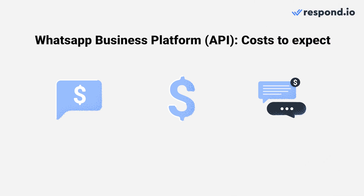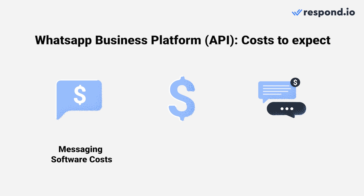Getting WhatsApp API is free. However, since the API does not have an interface, you need to integrate it with a messaging software to send and receive messages. For quick and easy setup, get both API access and messaging software from one business solution provider. Aside from the messaging software costs, some BSPs may impose charges for each message, setup, and maintenance fees, while WhatsApp only charges conversation fees.